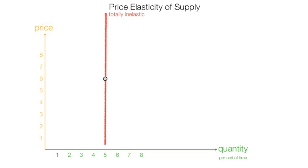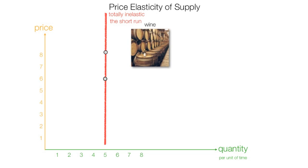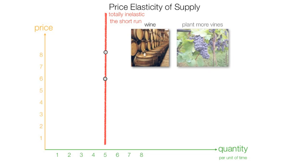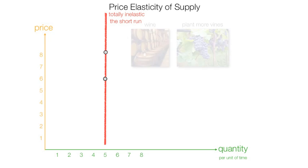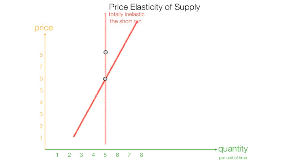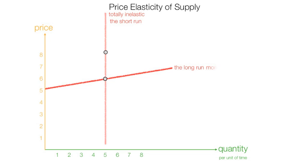Most supply curves are inelastic in the short run — sometimes totally inelastic. From a wine perspective, the supply of wine is totally inelastic in the short run. Even if price goes up, it's hard to produce more wine in the short run — it takes time to plant more vines and grow those vines. Eventually, supply begins to flatten out and becomes more elastic over time. Supply becomes more elastic as time passes because you can plant more vines and respond to increases in price. Short run inelastic, long run more elastic.